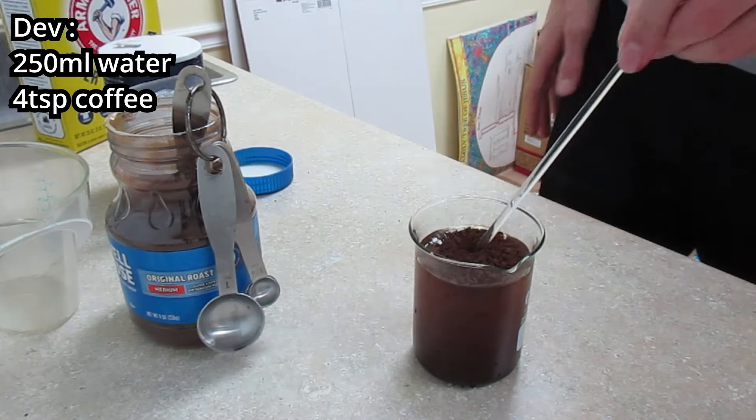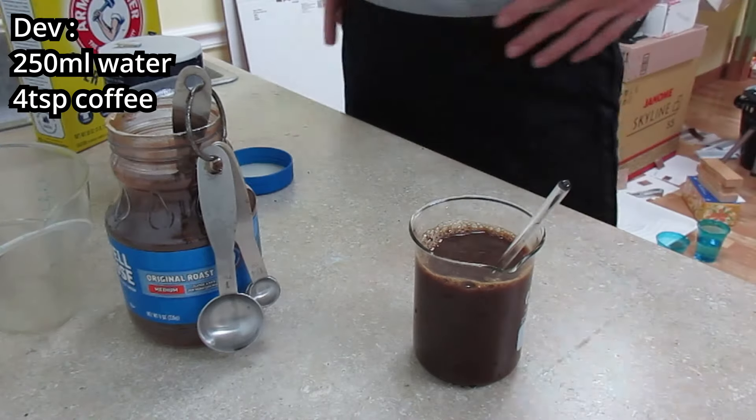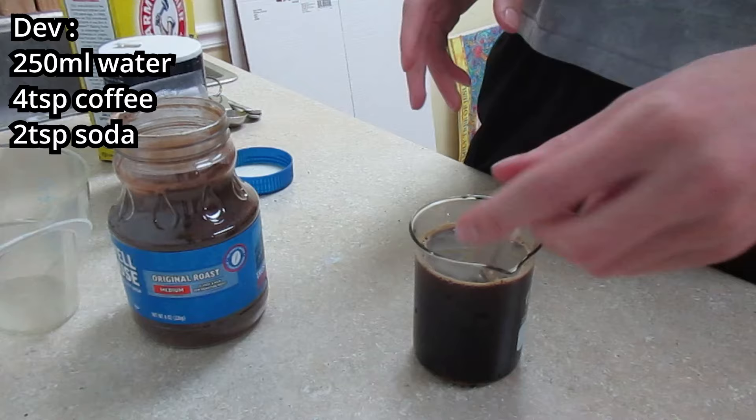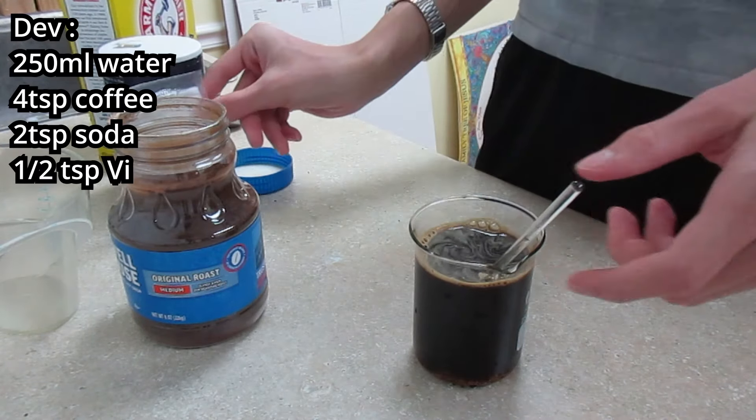And stir that in. Now add two tablespoons of washing soda, and then we're gonna add to that about half a tablespoon of vitamin C.